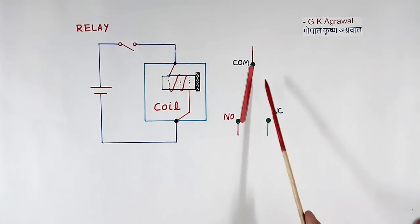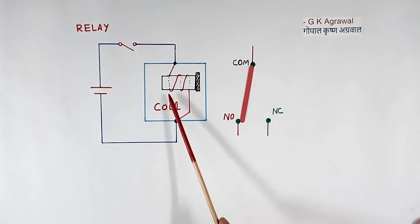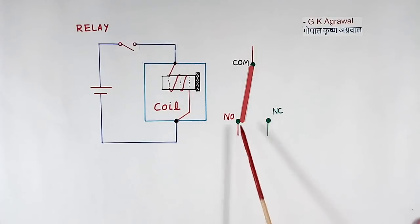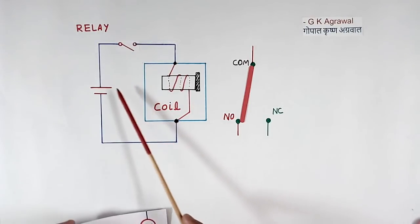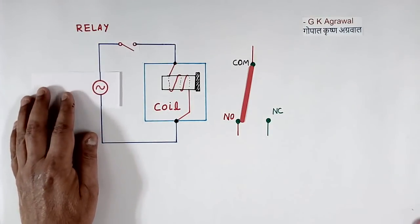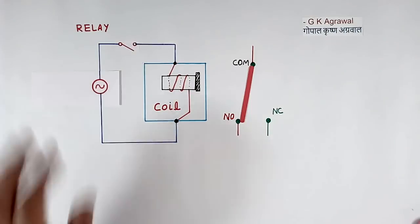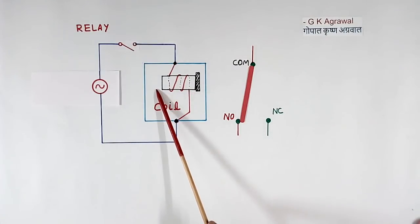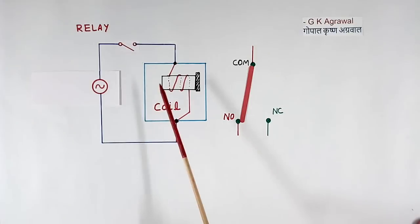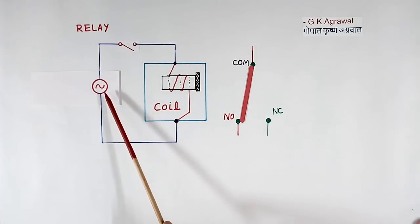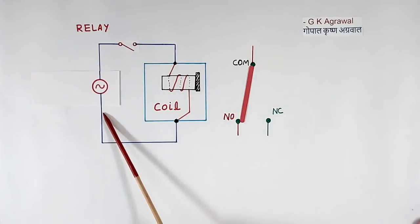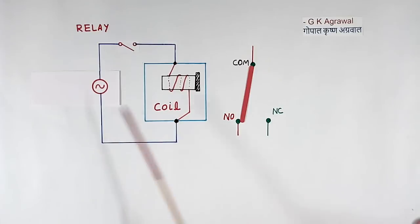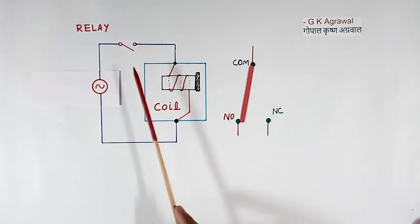When the current was not here, the connection was at the NC. When the current is here, the connection moves to NO. This demonstrates isolation: the input side is DC, and the output side can be AC or DC — these are isolated circuits. The relay connects a DC input circuit to an AC or DC output circuit with isolation.